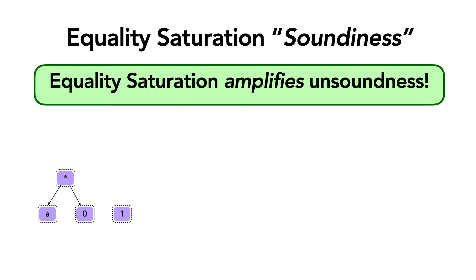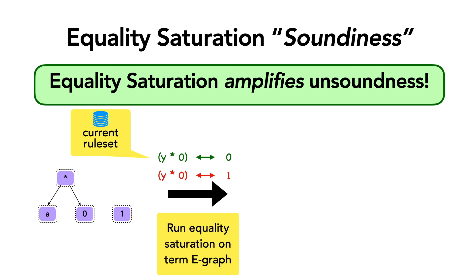To know what that means, consider this tiny e-graph and the rule set which has one sound rule and one unsound rule that has somehow crept in, for example due to insufficient fuzzing. Now, when Ruler runs this rule set during equality saturation on the term e-graph, the first rule will merge a times zero with zero as it should, but then when the next rule applies, it also merges a times zero with one, which ends up proving zero equal to one. Equality saturation will detect this incorrect merge and crash and indicate to the user that some unsound rule is present in the rule set.